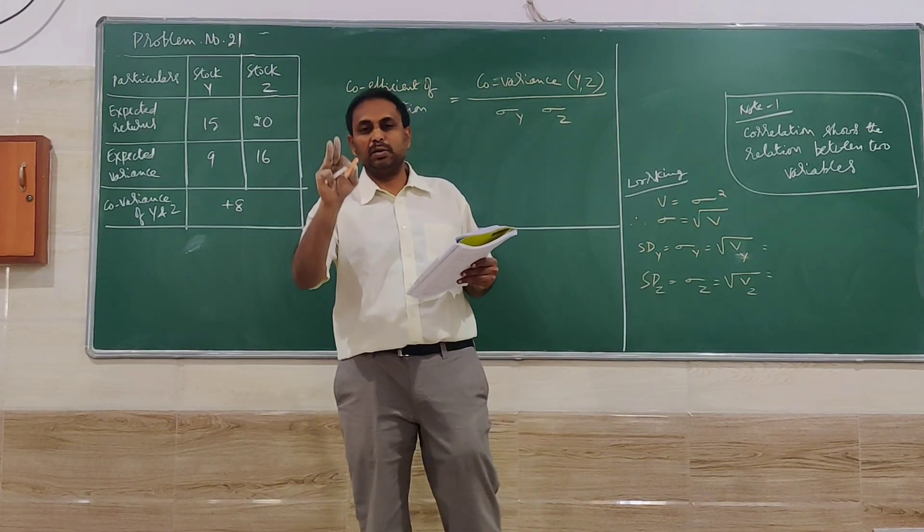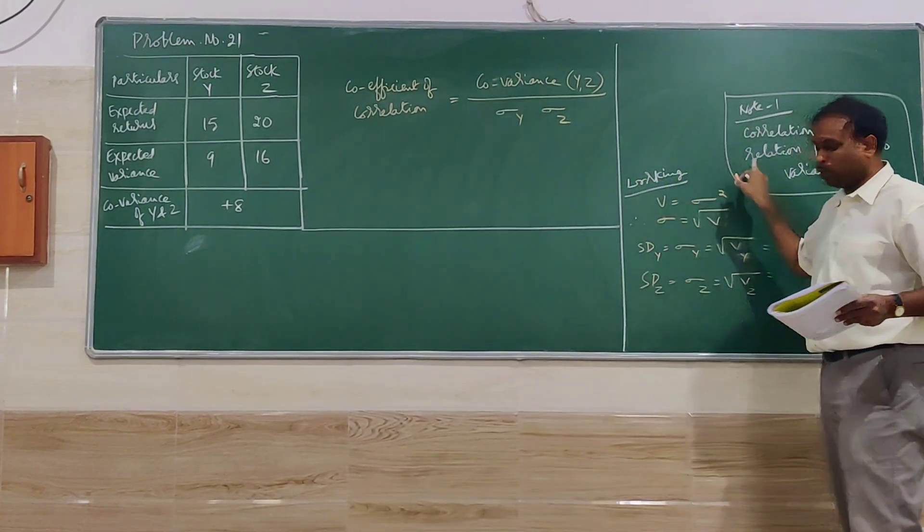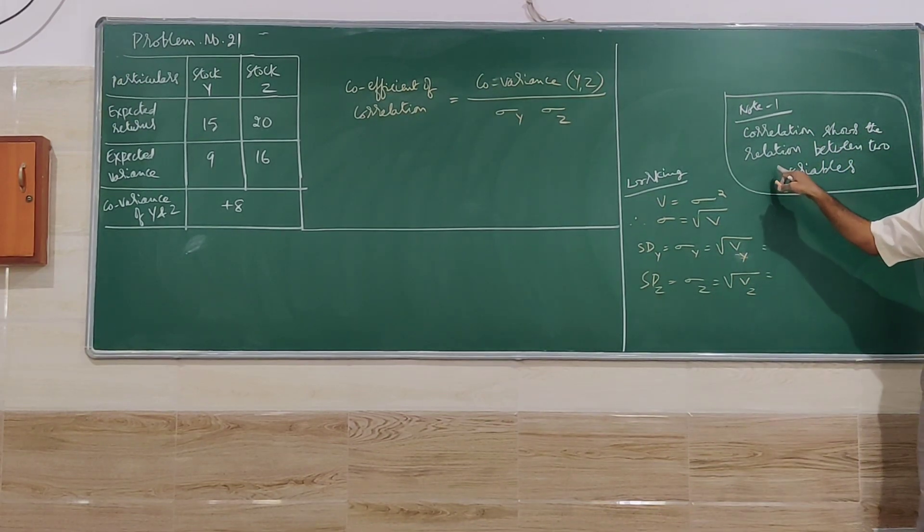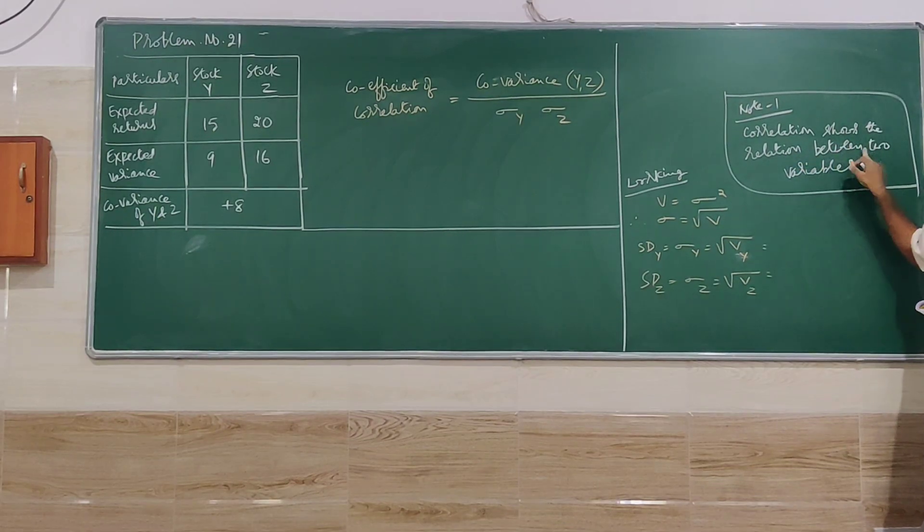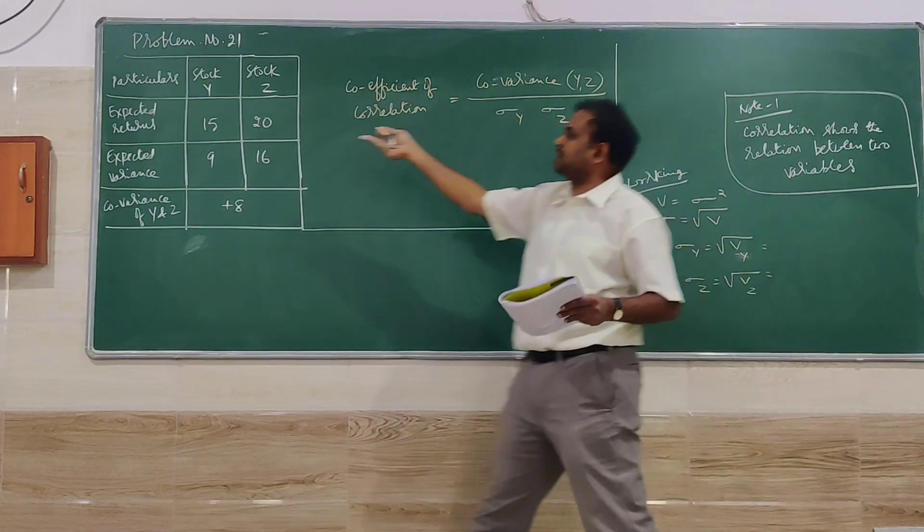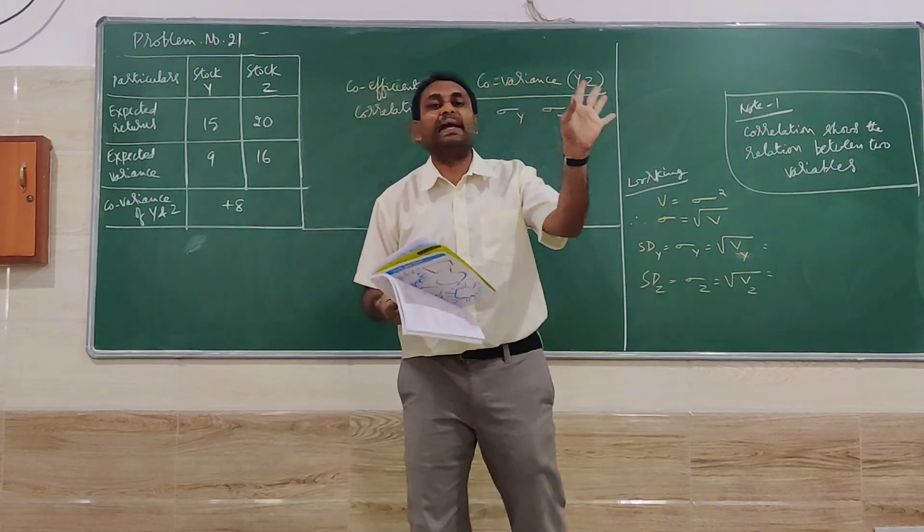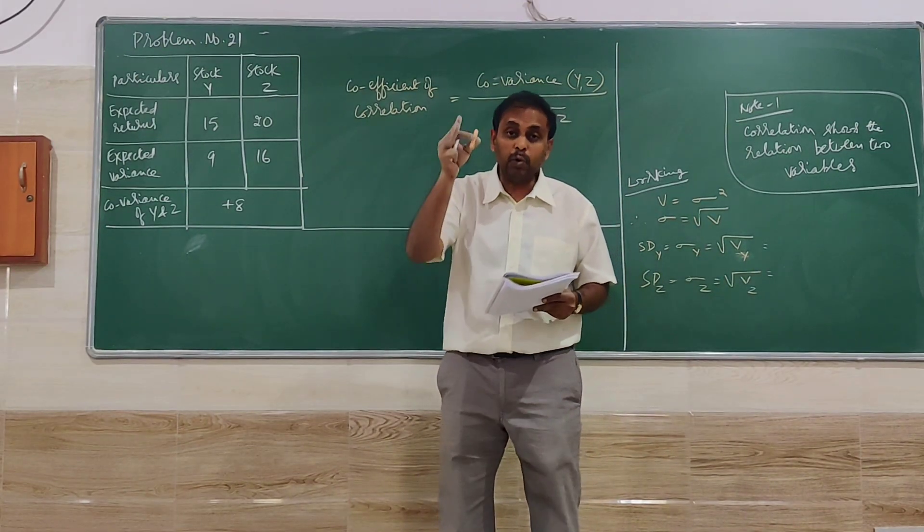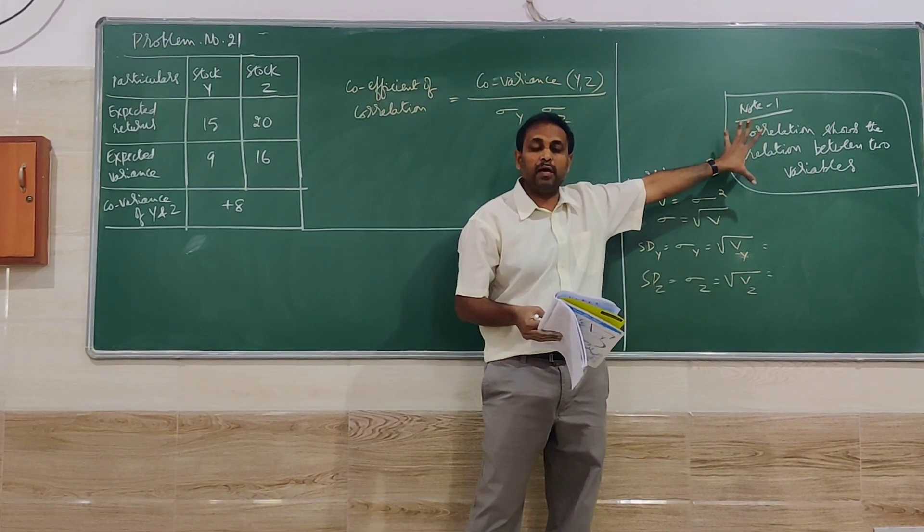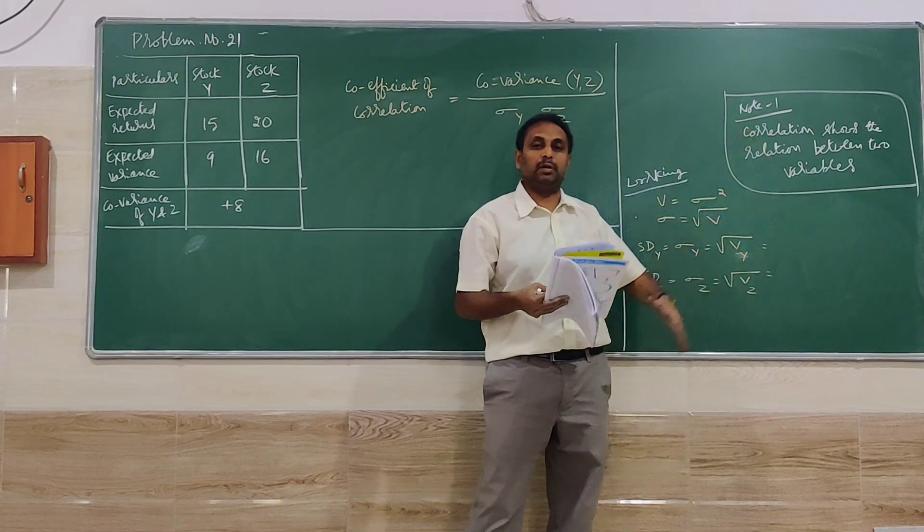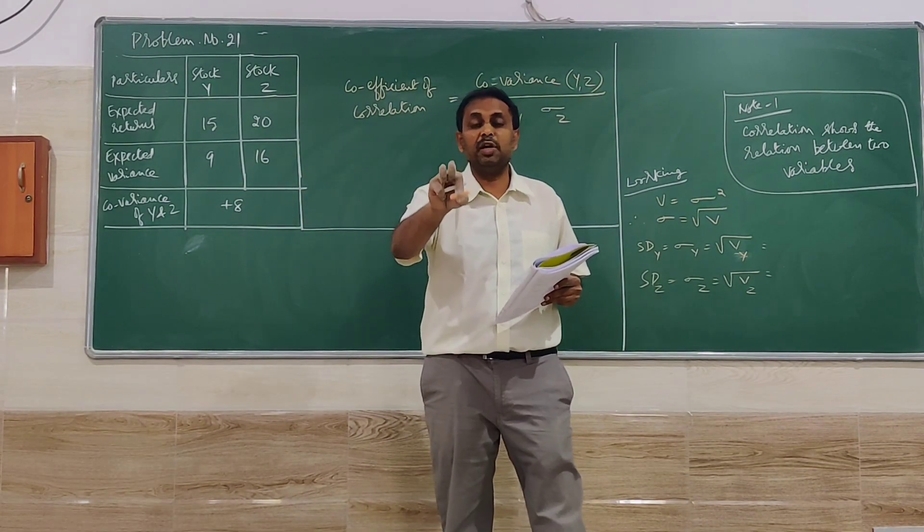So how to decide whether it is good to hold or not good to hold? For that we have to go for a relationship here called correlation. Correlation shows the relation between the two variables or two investments here. In the problem it is not mentioned what is to be calculated, so we have to understand from the problem what has to be calculated. So we have to calculate here the correlation. First we have to find is the relation between the two stocks positive or negative.